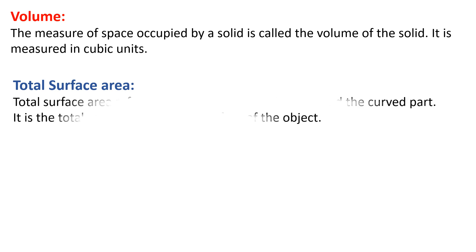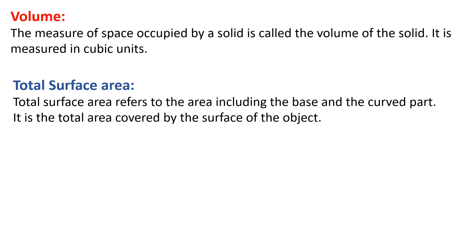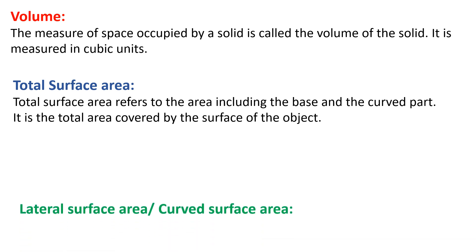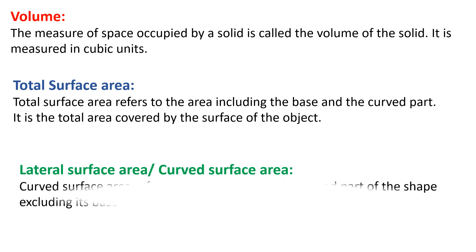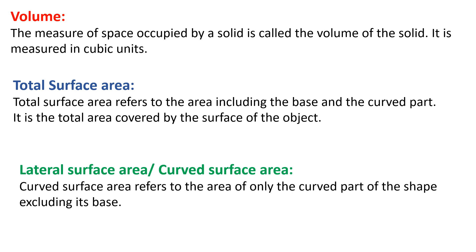You will come across the keyword total surface area. Total surface area refers to the area including the base and the curved part — it is the total area covered by the surface of the object. You will also come across curved surface area or lateral surface area. Curved surface area refers to the area of only the curved part of the shape, excluding its base.